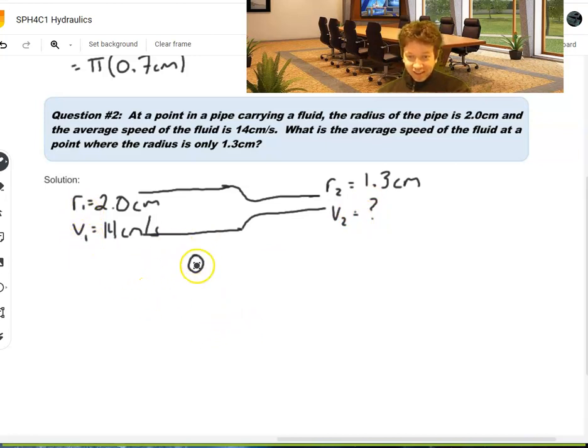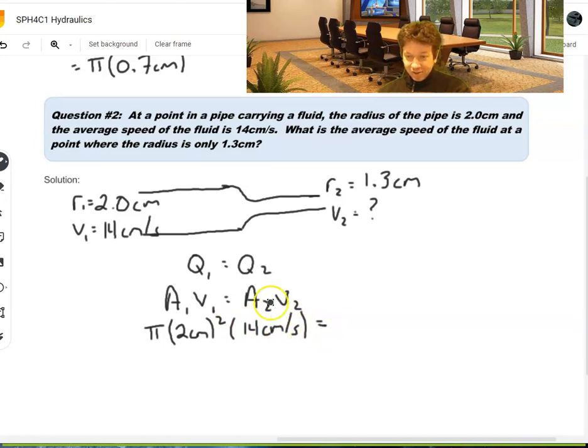Let's call this R1 and V1. So, the volume flow rate has to stay the same. So, Q1 must equal Q2. So, that means area 1 times speed 1 must equal area 2 times speed 2. Now, again, we're given radius, not area. So, the area for a circle would be pi times R squared, where R is 2 centimeters squared multiplied by the speed, which is 14 centimeters per second. And that equals, again, area 2, we know R, so pi R squared, so pi times 1.3 centimeters squared times V2.